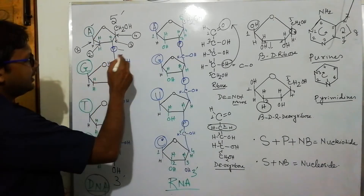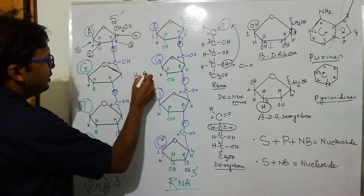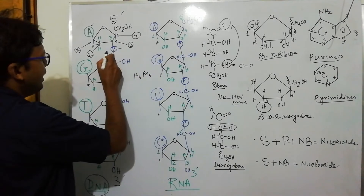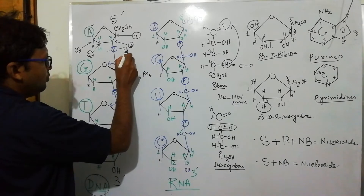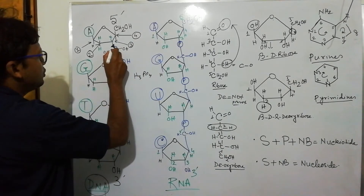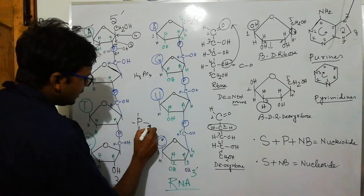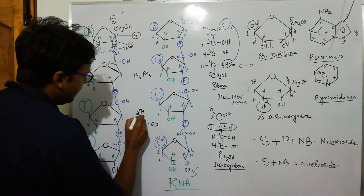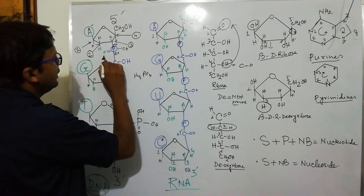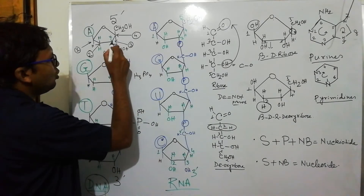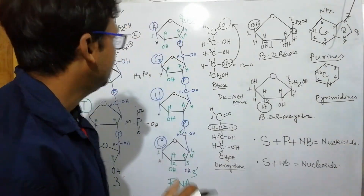The actual structure of phosphate is H3PO4. It has three OH groups, one double bond oxygen, and two additional oxygen groups. Two of these OH groups are involved in the formation of a phosphodiester linkage, which is the key bond connecting nucleotides in the DNA and RNA backbone.